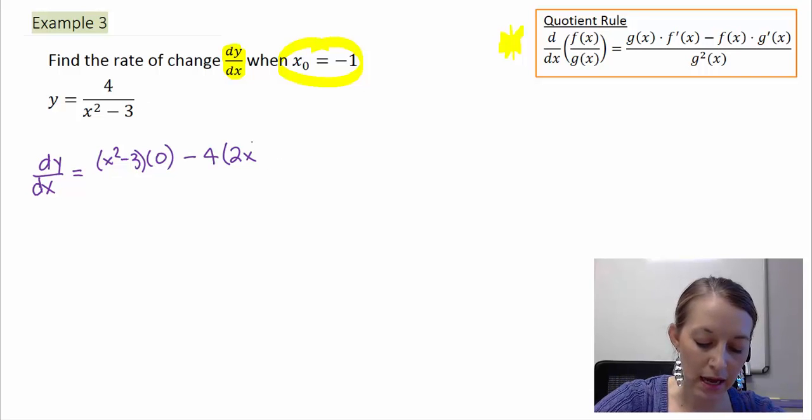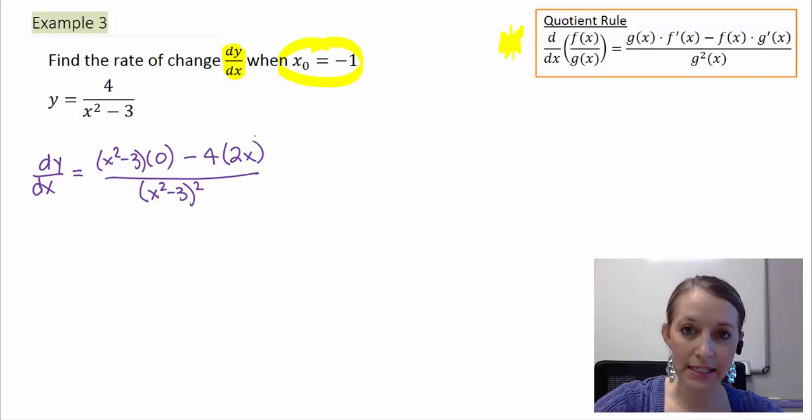And the derivative of my constant, yet again, gives me 0. And that is all over the bottom squared. So one more time, low d high minus high d low all over the low squared.